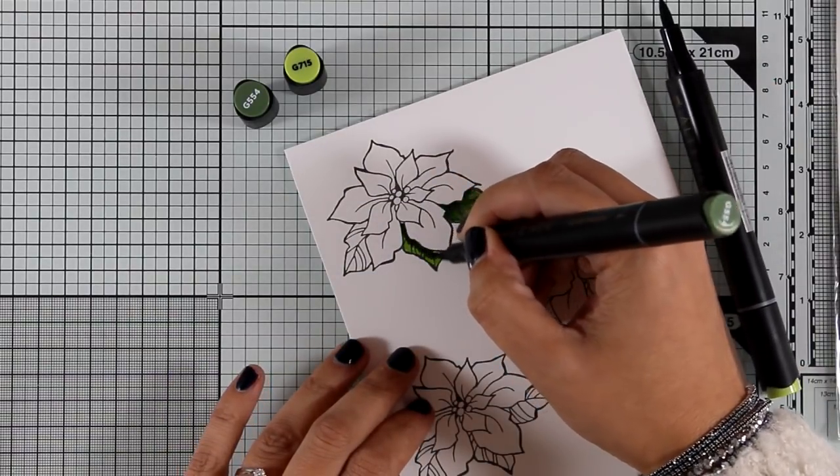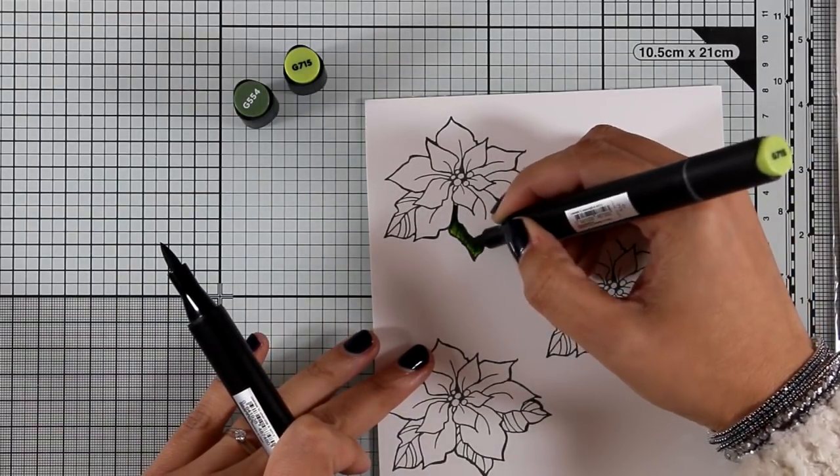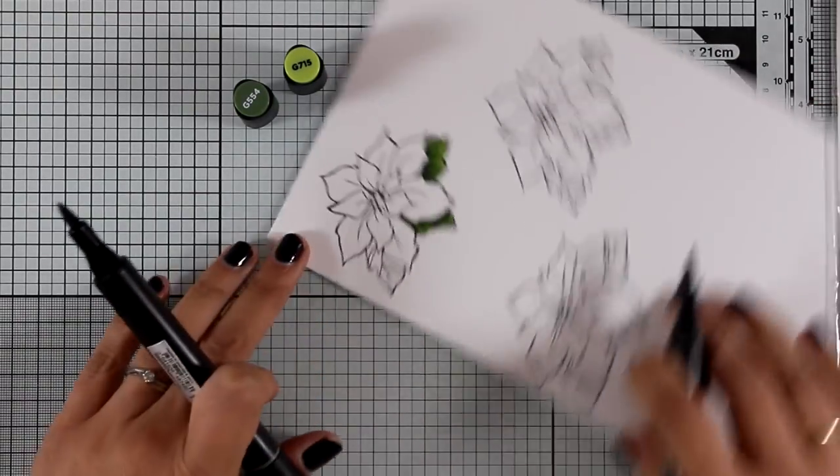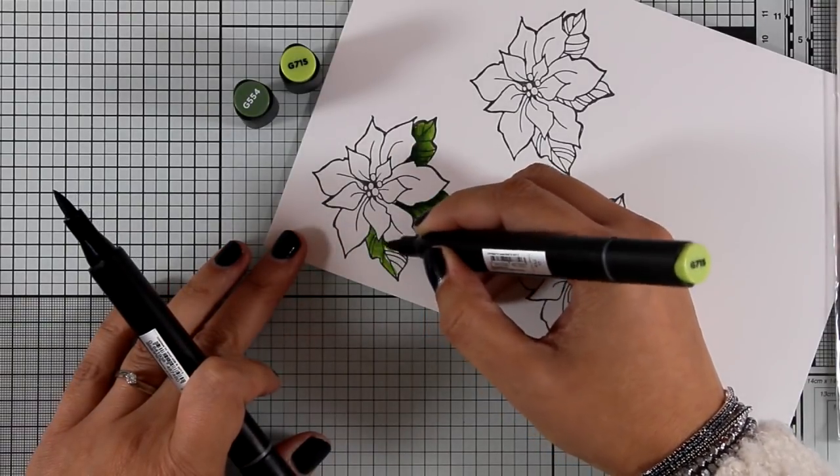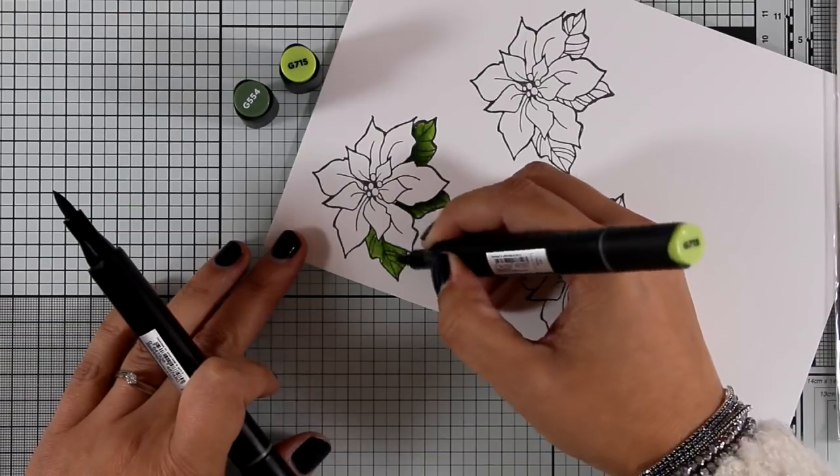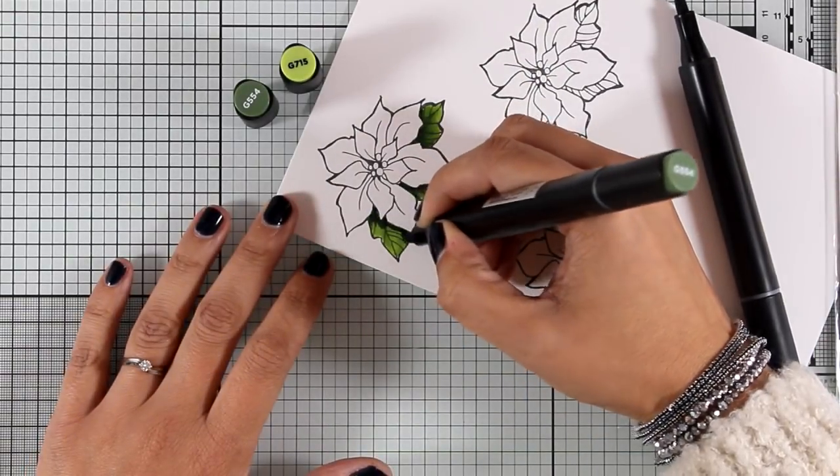Now of course you can recreate this card without dimension at all and I will discuss that later on. For now I am coloring the different parts of the images, so here I'm going to color the leaves and for that I'm using my Altenew alcohol markers and you can see the colors that I'm using on your screen right now.